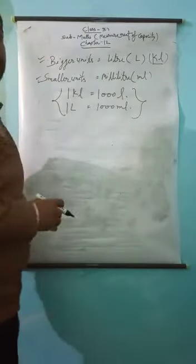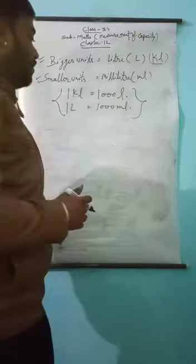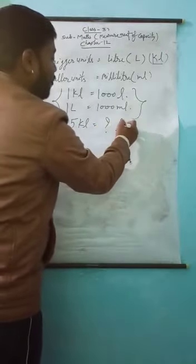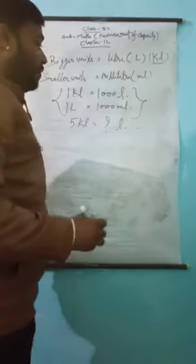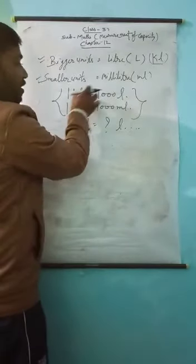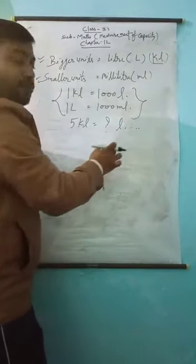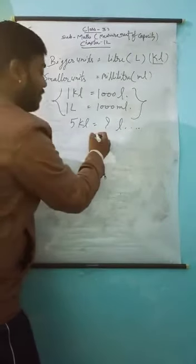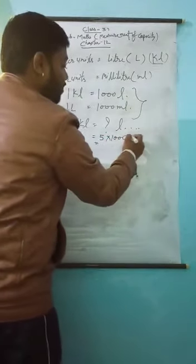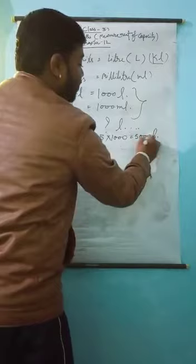If they give you some kilo liters — for example, five kilo liters of water — and ask how many liters that is, we know one kilo liter is equal to one thousand liters. So five kilo liters equals five multiplied by one thousand, which becomes five thousand liters.